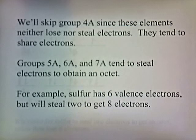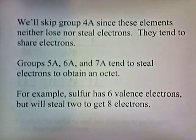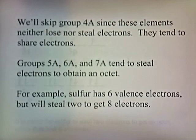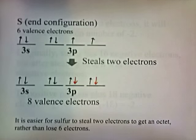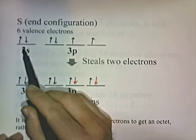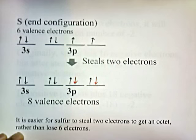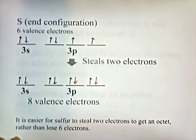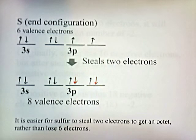We'll skip group 4A since these elements tend to have variable oxidation states and share electrons more often. Groups 5A, 6A, and 7A tend to steal electrons to obtain an octet. For example, sulfur has 6 valence electrons but will steal 2 to get 8 electrons. Sulfur's outer configuration shows 2, 4, 6 electrons, and from some atom that wants to lose electrons, it will steal 2 to reach 8 outer electrons. It's easier for sulfur to steal 2 electrons to get an octet rather than lose 6 electrons.